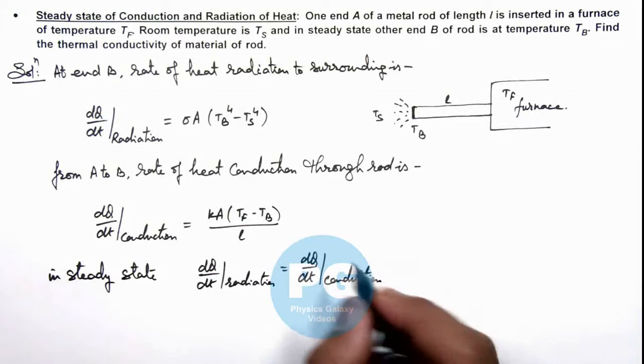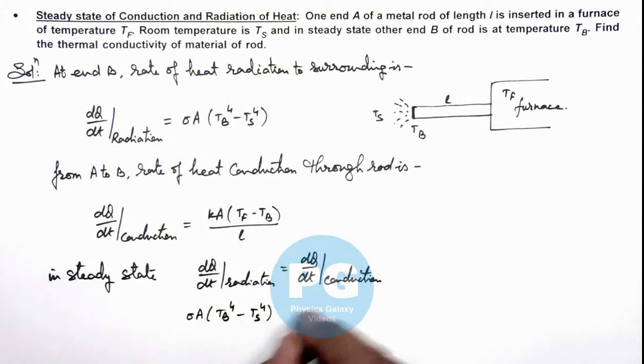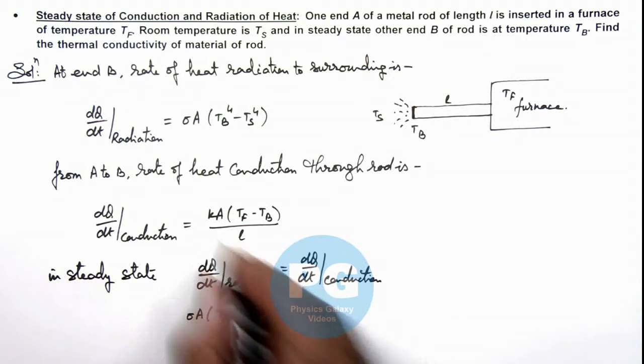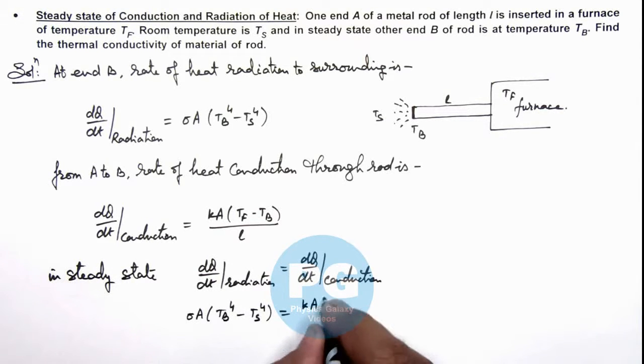So if we equate the two values, dQ/dt of radiation is σA(T_b^4 - T_s^4) should be equal to dQ/dt of conduction, which is kA(T_f - T_b)/l.